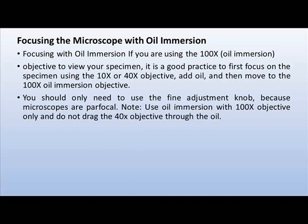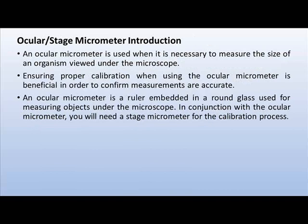In this topic we learn about focusing with oil immersion. Oil immersion is used to observe bacteria, and cedarwood oil is typically used in this method. If you are using the 100x oil immersion objective, it is good practice to first focus on the specimen using the 10x or 40x objective, then add a small quantity of oil. The stage is slightly lowered with the help of knobs and the 100x oil immersion objective is carefully moved onto the slide. You should only need to use the fine adjustment knob because microscopes are parafocal. Use oil immersion with the 100x objective only and do not drag the 40x objective through the oil. After use, clean all objectives as discussed earlier.